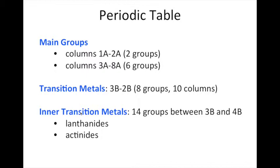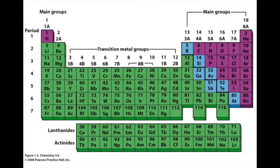The main group elements are columns 1A through 2A and 3A through 8A. So the main group elements would contain group 1A and 2A, so the first two groups right here, and then also you can see over here group 3A all the way to 8A. So over here and over here are the main group elements.